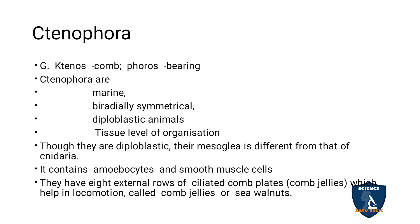Ctenophora have 8 external rows of ciliated comb plates, as the name indicates — 'cteno' means comb. These comb plates are used in locomotion. They are commonly called comb jellies or sea walnuts, because they look like a walnut found in the sea.